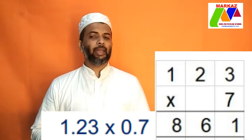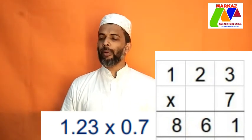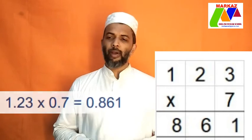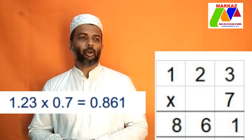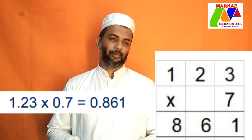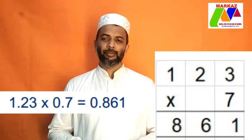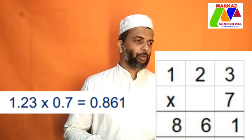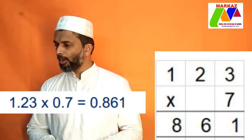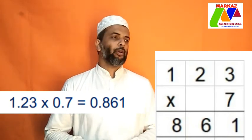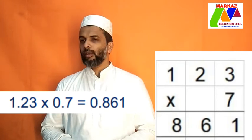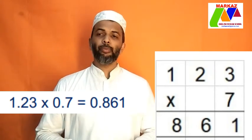There should be three decimal places in the answer. So, the final answer is 0.861. 1.23 into 0.7 is equal to 0.861. I hope this is clear to you.